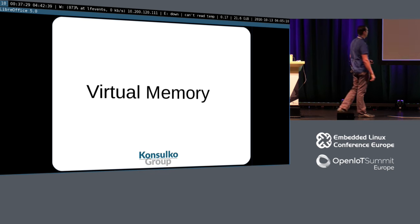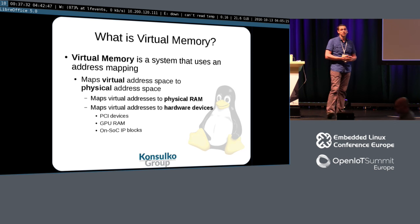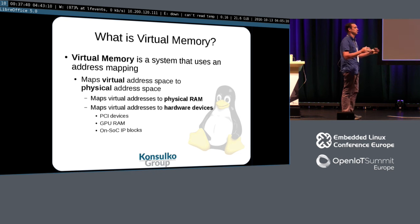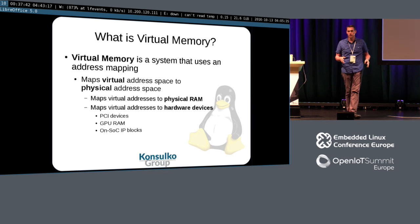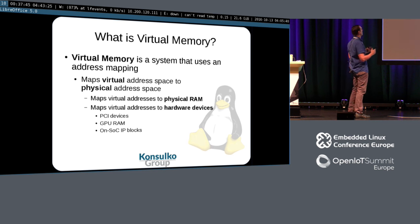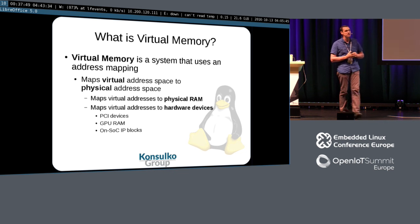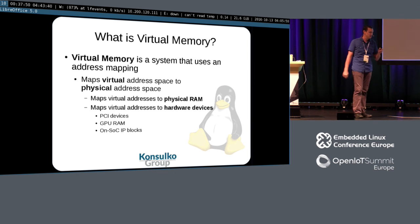In comes virtual memory, and this is where things get fun. It's a mapping — a virtual mapping, hence the name. You map a virtual address, a fake address, to a physical address. When we look back at that x86 map, that's the physical world, and if we think in virtual addresses we can have any mapping we want. We map virtual addresses to physical RAM, but we also map virtual addresses to hardware devices — PCI, GPU RAM, on-SoC IP blocks.